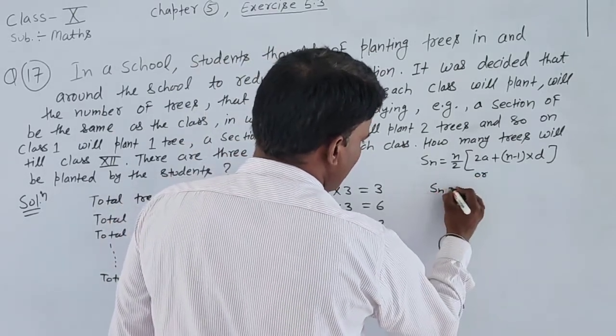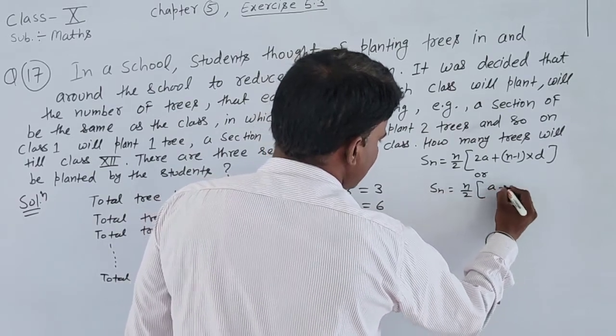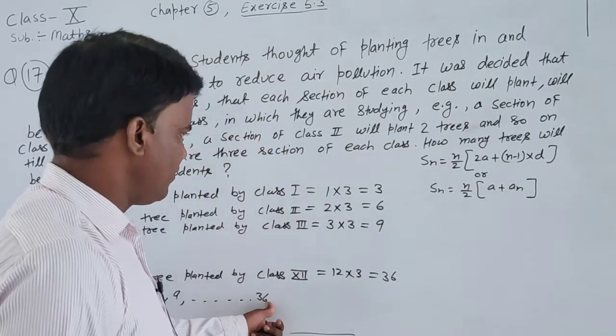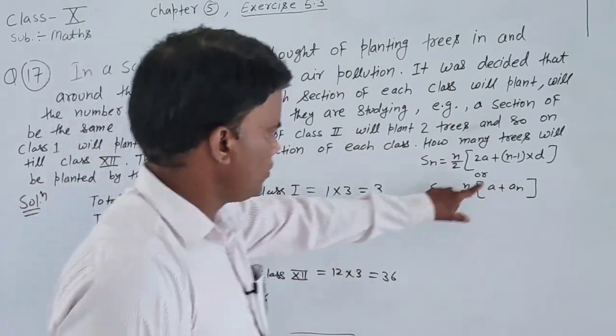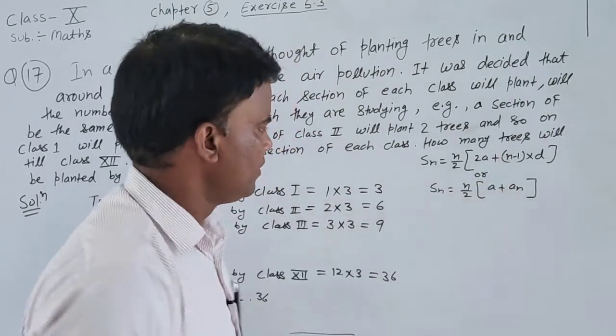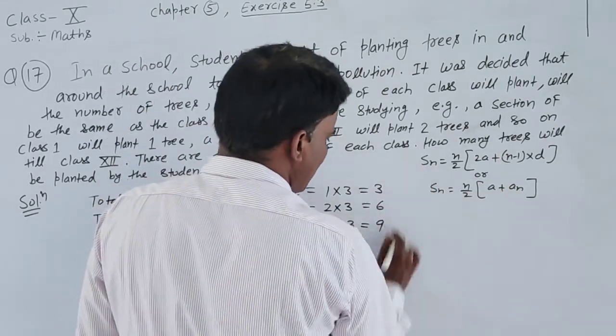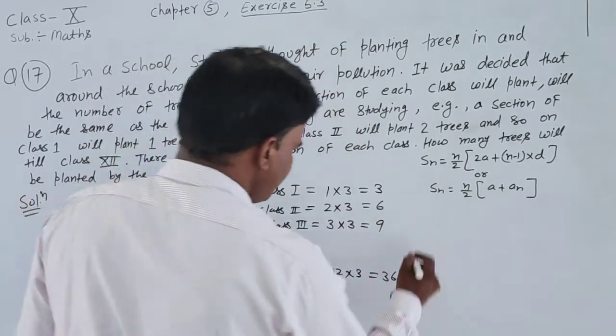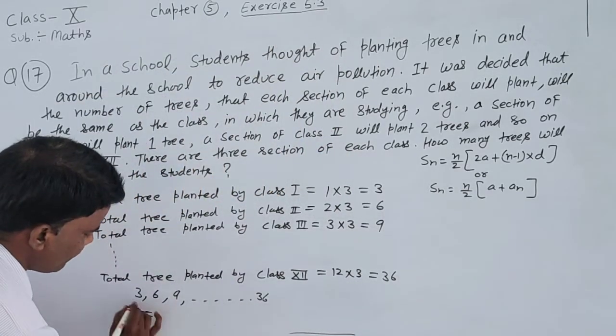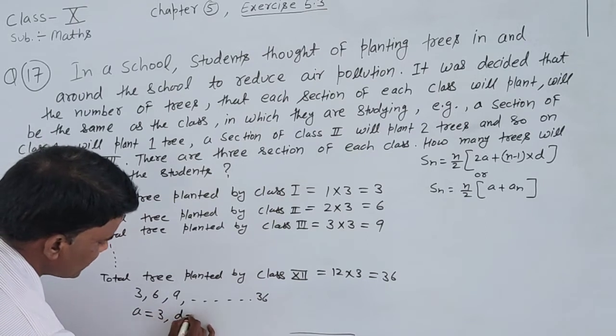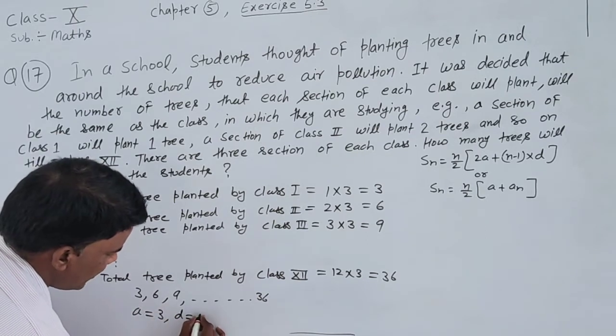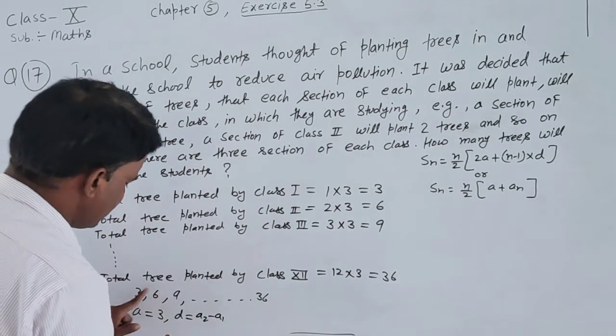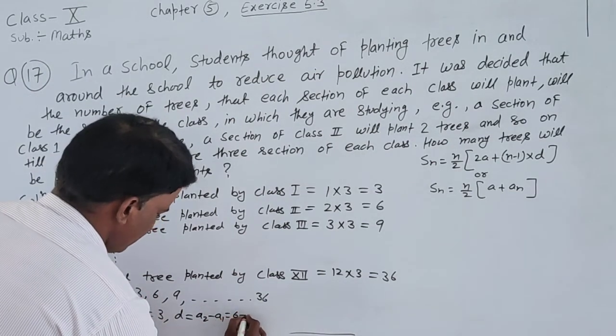We can also use S_n equals n by 2 times (a plus l), where l is the last term. The common difference d equals a_2 minus a_1 equals 6 minus 3 equals 3.